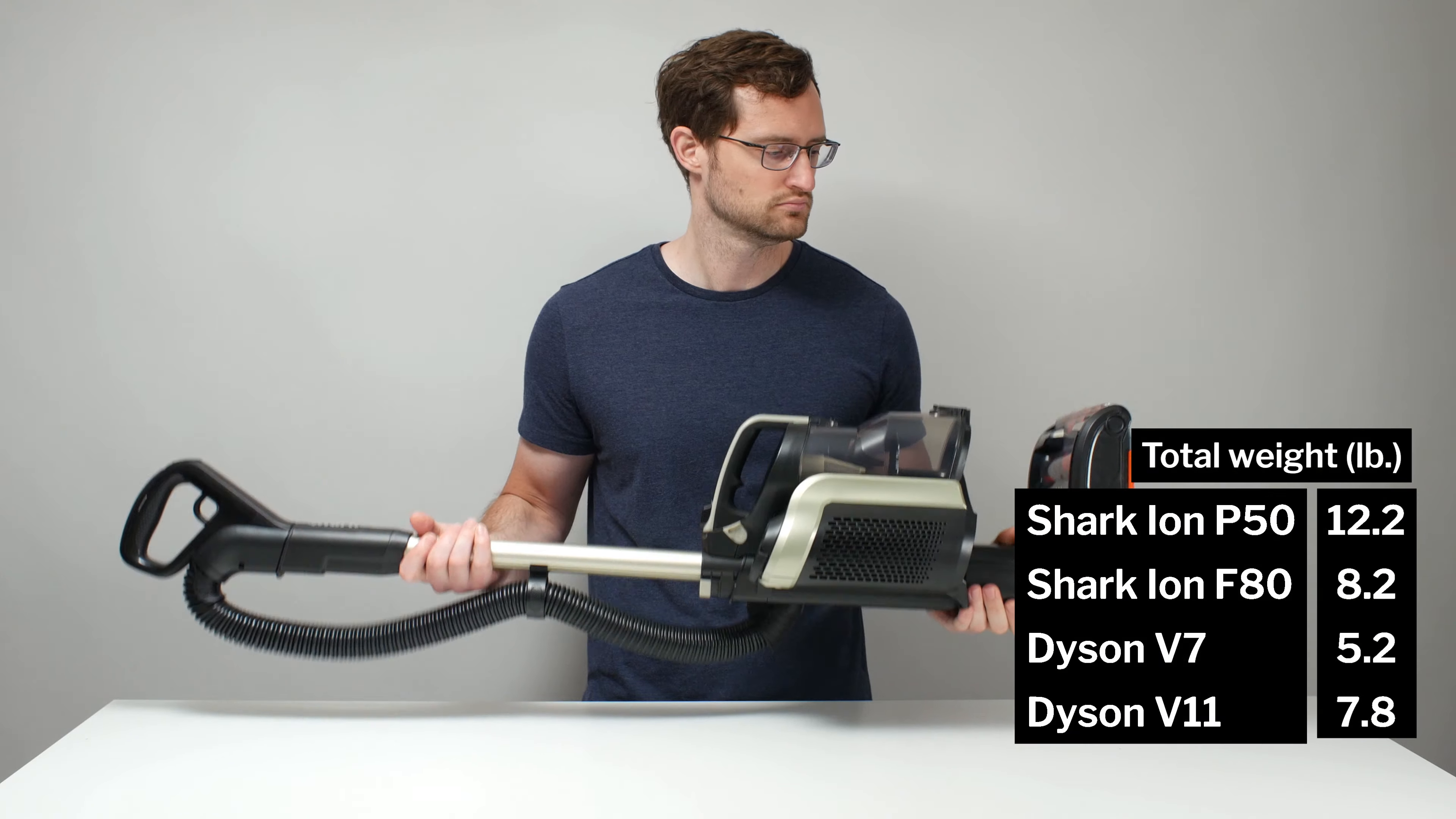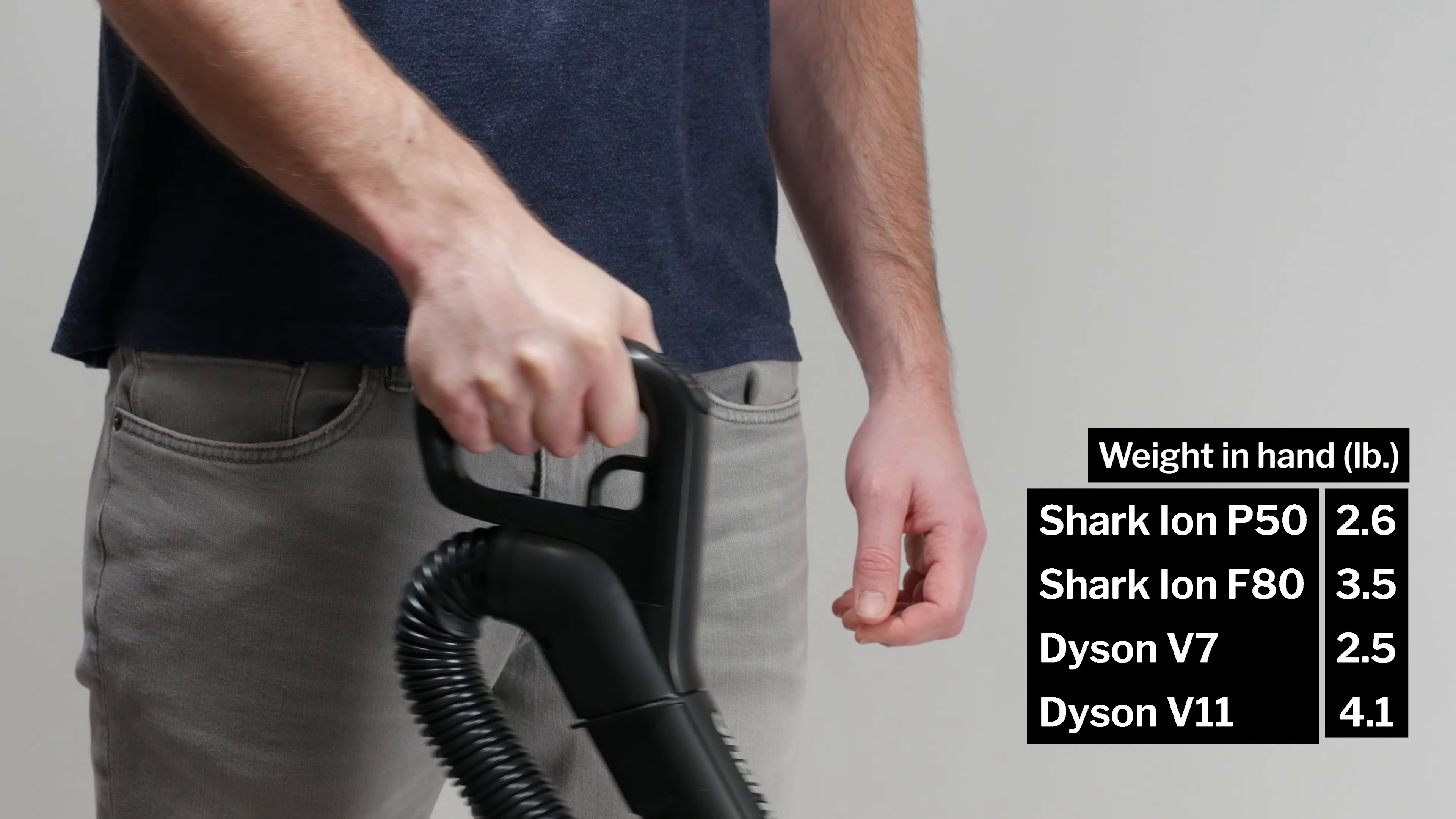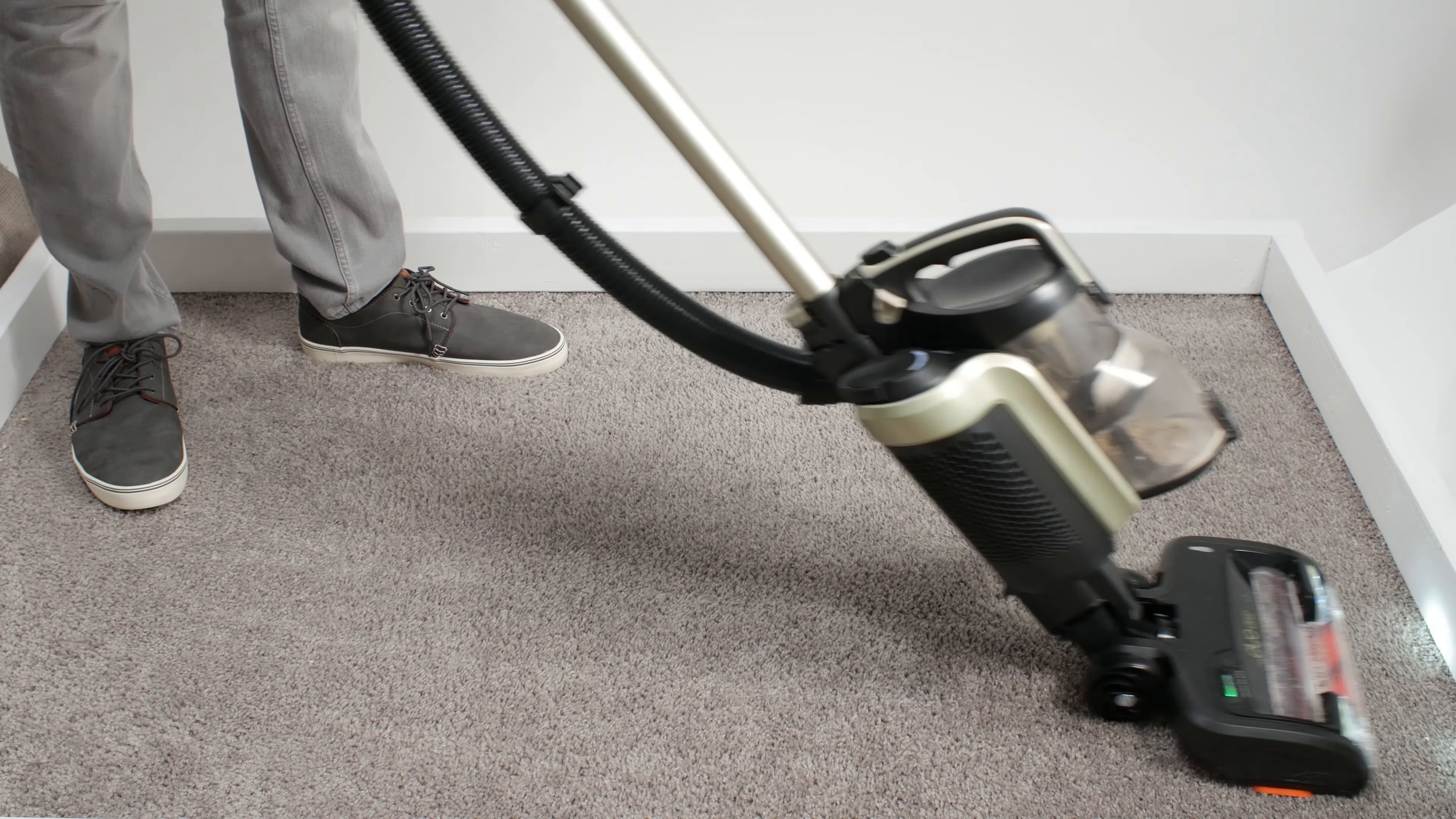Next, we have ease of use. The P50 is not a light cordless vacuum. It weighs 12.2 pounds. It is light in the hand though, since most of its weight is distributed towards the bottom of the vacuum. The issue is that you're constantly pushing a lot of weight around near the bottom of the vacuum. This reduces the vacuum's handling ability compared to lighter options.